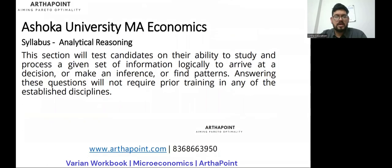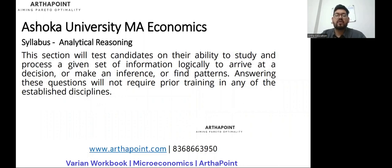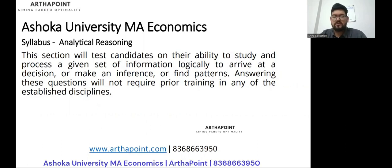Coming to the final part — analytical reasoning. When this section comes in, whether as part of a bigger section or on its own, the best approach is to try and solve as many questions as possible. Even then, try to solve a variety of questions. For example, you can solve data interpretation questions — five questions — or direction questions — five questions — then age questions, family tree, and others. There's a lot of content required, so for this analytical reasoning section, you can refer to the sample paper as well and try to solve as many questions as possible.